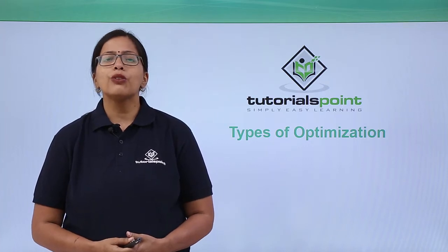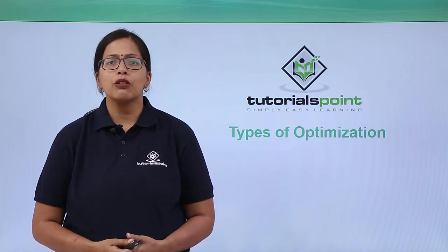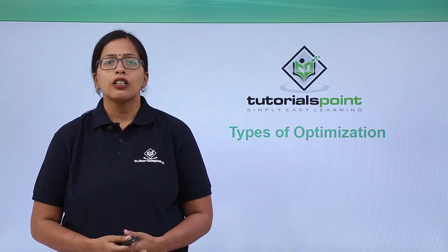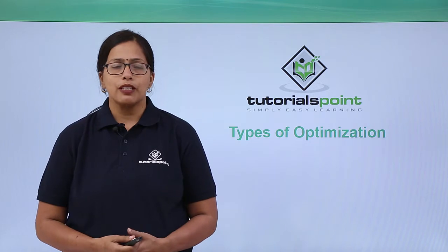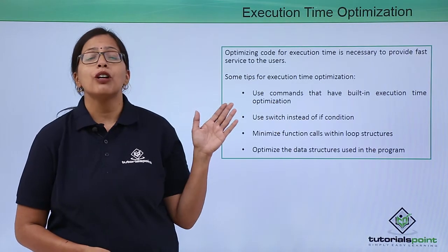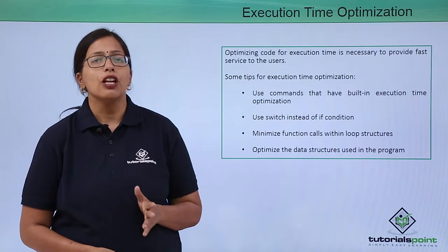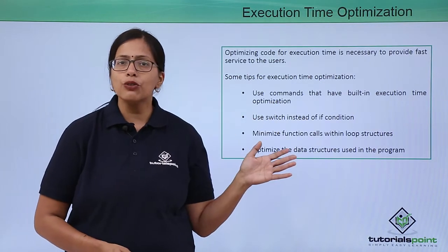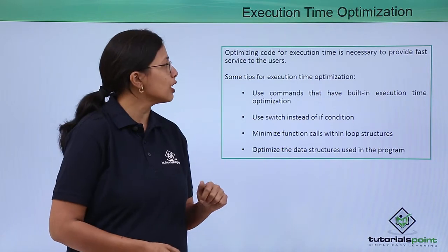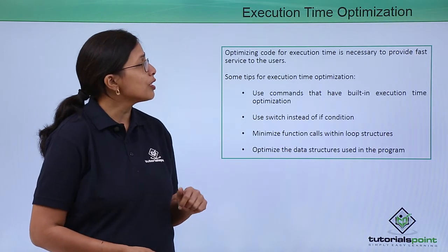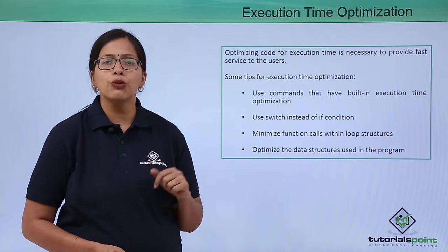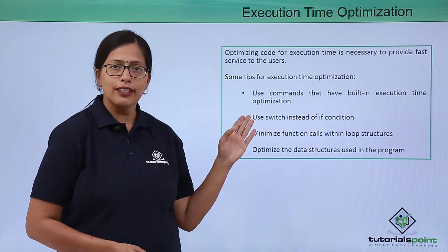In this video we are going to discuss different types of code optimization. The first is execution time optimization — we need to optimize our code for execution time because that provides faster service to the users.